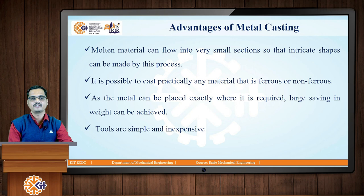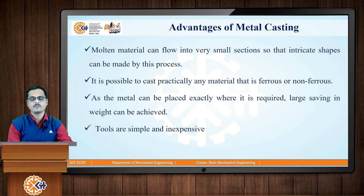A second advantage is that it is possible to cast practically any material — ferrous or non-ferrous. Any material in the world, if we are able to convert it into liquid form, we can produce a casting from it. A third advantage is that as the metal can be placed exactly where it is required, there is a large saving in weight. The size and shape of the cavity are very similar to those of the casting, resulting in large savings in weight.